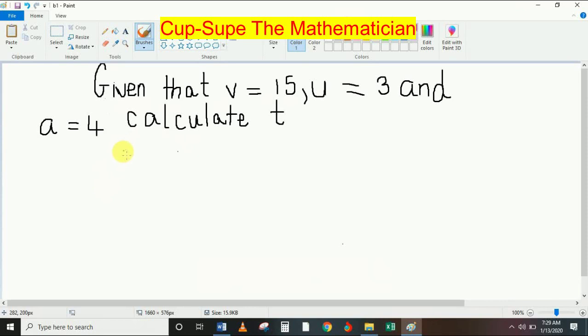I'm going to rewrite the result for question 1. T equals V minus U over A. What's the value for V? V is 15. And then minus, the value of U is 3. So I'm going to write 3 right here and draw a line.